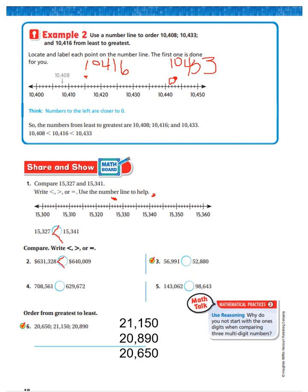Let's go to number three. $56,991 is more than, less than, or equal to $52,890. Well, $56,000 is larger than $52,000. So it is more than. $708,000 is more than, less than, or equal to $629,672. Well, $708,000 is more than $629,672. So it's more than. $143,062 is more than $98,643. It is more than.